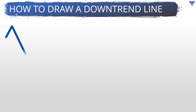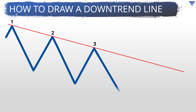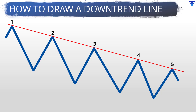Drawing a downtrendline is similar to the way in which an uptrendline is drawn. Observe the two highs numbered 1 and 2. As the price made the second high and reversed lower, it can be assumed that a tentative high is in place. A downtrendline can then be drawn connecting the two highs and projected into the future. Later, at point 3, see how the price took resistance near the vicinity of this downtrend line and reversed lower. This decline from trendline resistance confirms the validity of the downtrend line. Going forward, you can expect the trendline to act as a future area of resistance so long as the price remains below it.